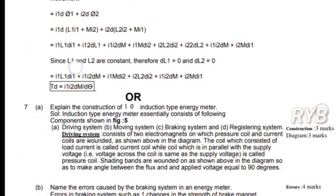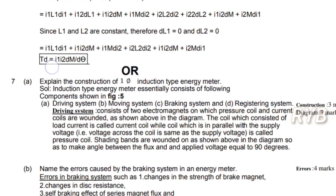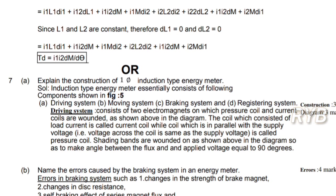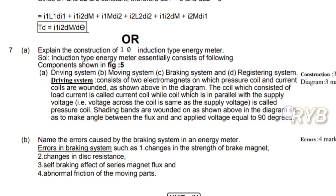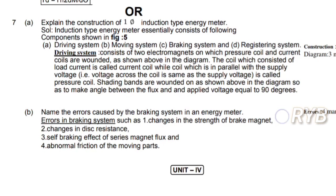Another choice in Unit 3: explain the construction of a single-phase induction type energy meter. The single-phase induction type energy meter has a driving system, moving system, braking system, and resistance system. We use the braking system to drive and brake the disc. When power suddenly goes down, disc rotation may continue causing continuous energy consumption. Errors caused by the braking system include magnet failure, abnormal friction in moving parts, and more electrical energy consumption even when a fault or power failure occurs.